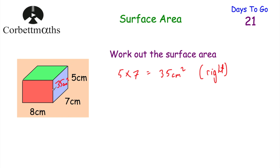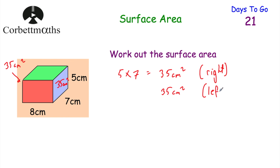If we know the area of this rectangle, that's going to be the same as the area of the rectangle on the other side. So the area of the rectangle on the left hand side would also be 35 centimetres squared — the area of the rectangle on the right hand side is the same as the area of the rectangle on the left hand side. Now let's do the top.